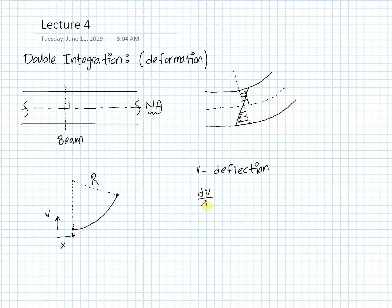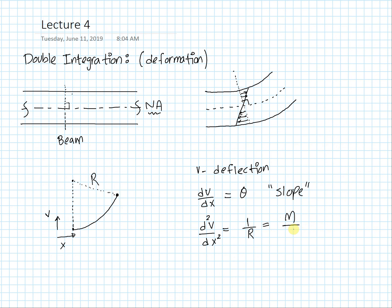The derivative dv/dx — the change in V over the span of the beam — is equal to theta, and as you may have already guessed, this is the slope. Next, we can take another derivative and that gives us another valuable piece of information: d²v/dx² equals 1/R, and as it happens this is equal to the moment M divided by the elastic modulus E divided by the moment of inertia I. This we call the curvature.